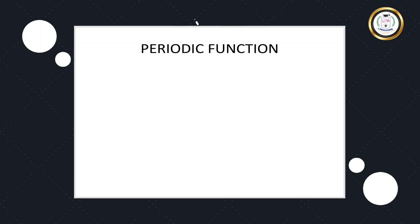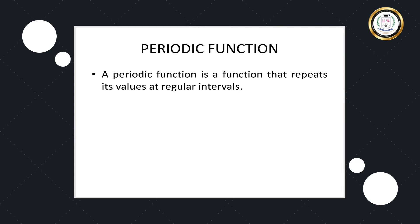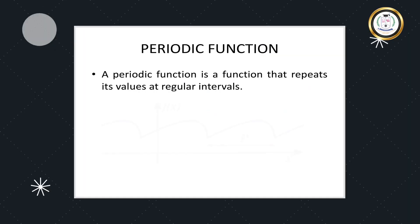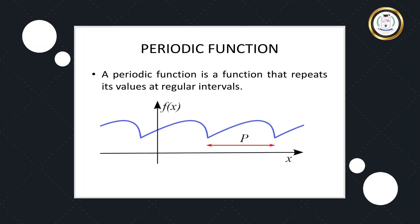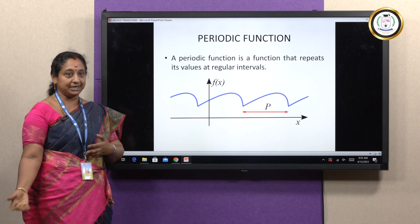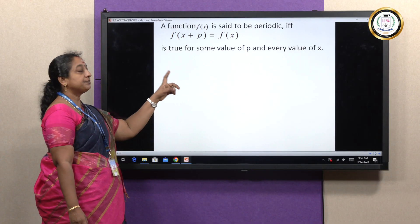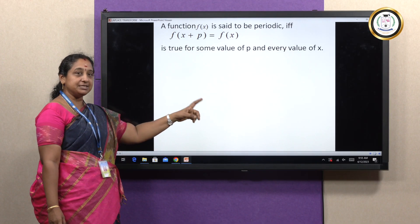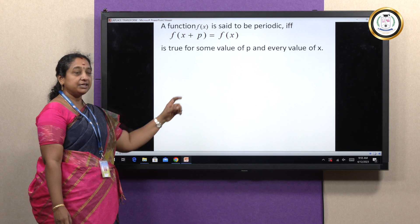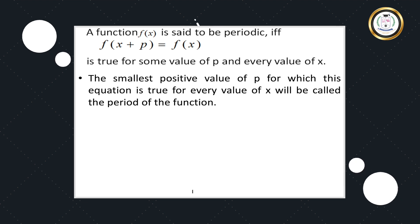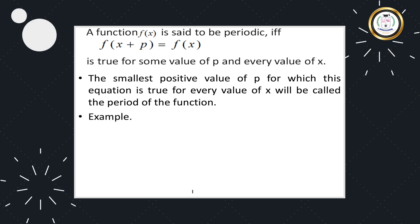A function is periodic when, at certain regular intervals, the same values repeat. A function is said to be periodic if and only if f(x + p) = f(x), where p is the period of the function, valid for all values of x. The value p should be the smallest such value.